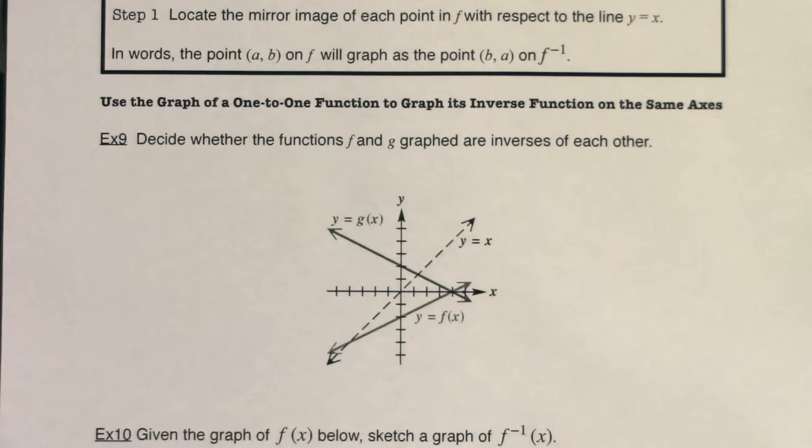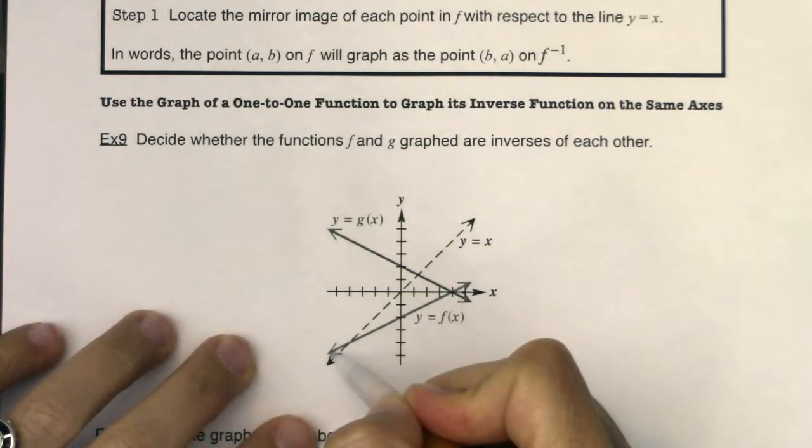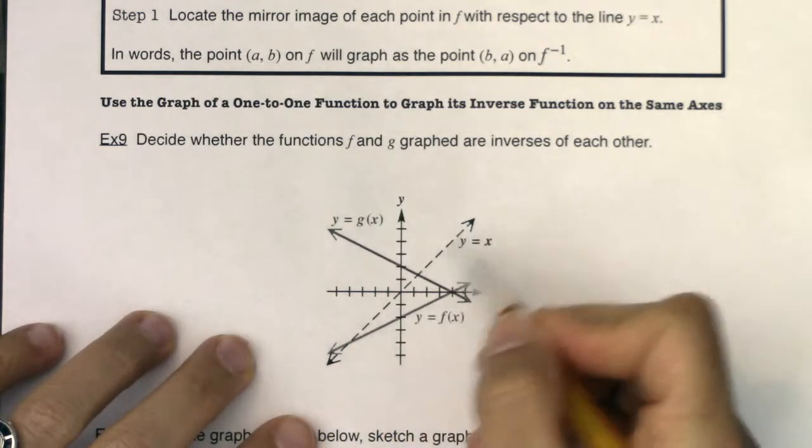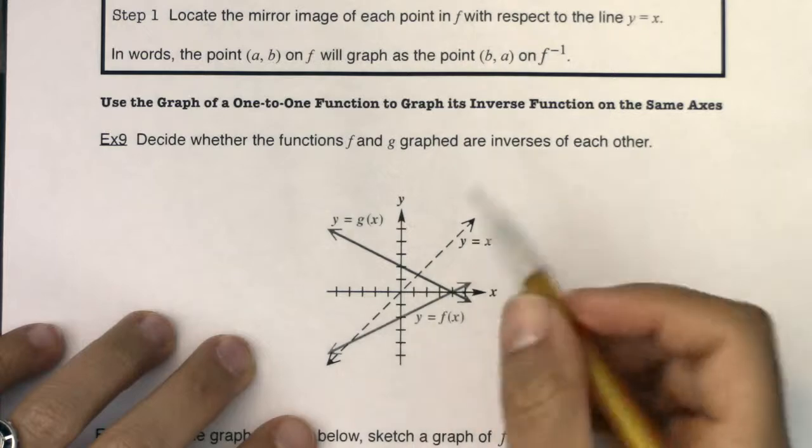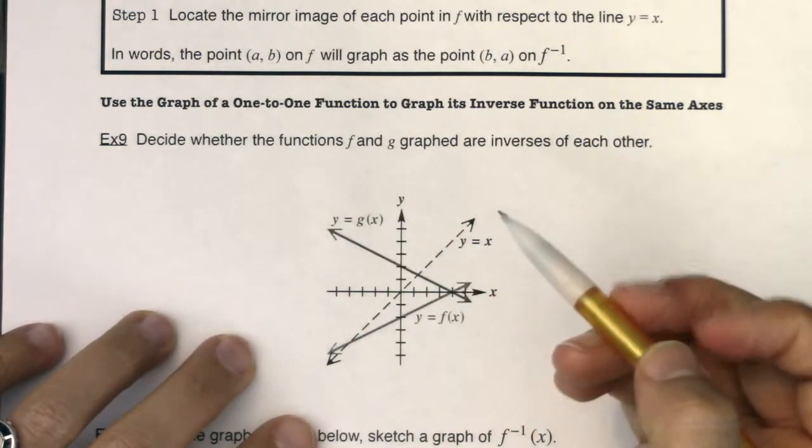So if you see this, these functions, these solid lines here, we see this one is f of x, this one is g of x. And here's the breaking line, right, the y equaling x line. I made it dotted because it's not one of the original two functions.